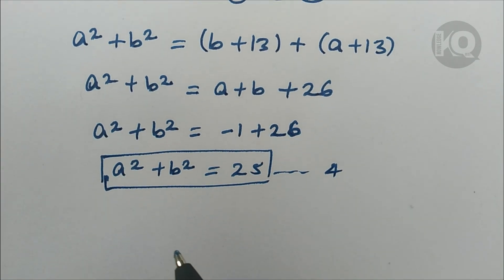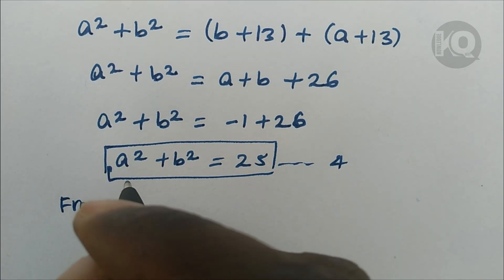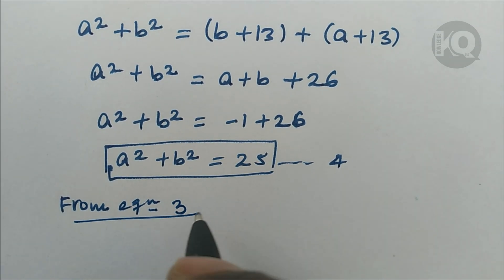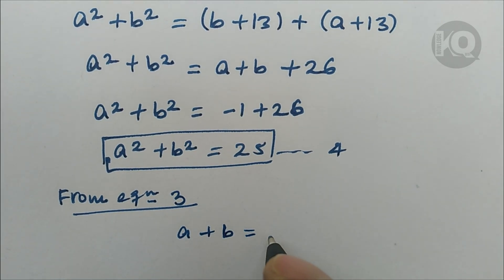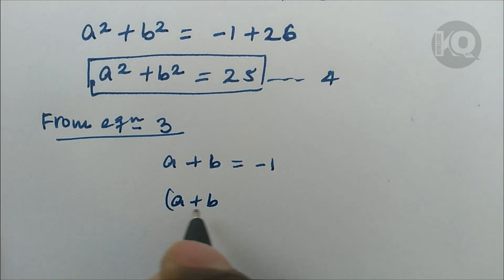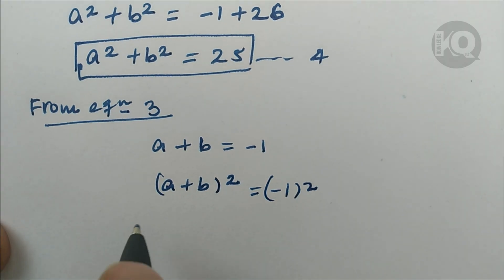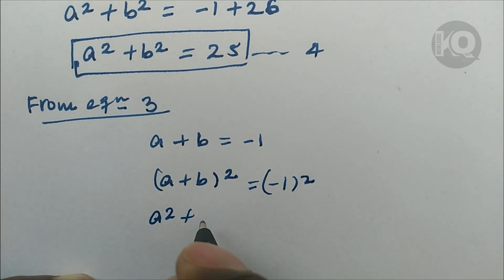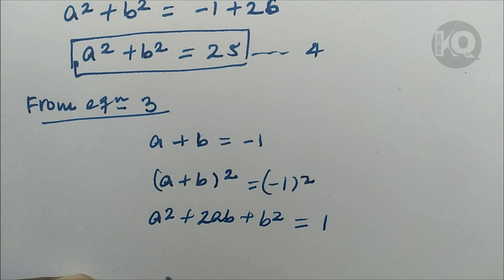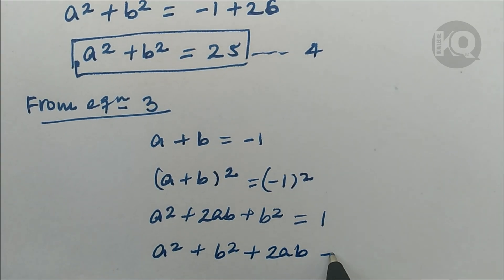From equation three, a plus b equals minus 1. Squaring both sides gives (a plus b) squared equals 1, which expands to a squared plus 2ab plus b squared equals 1. Rearranging, a squared plus b squared plus 2ab equals 1.